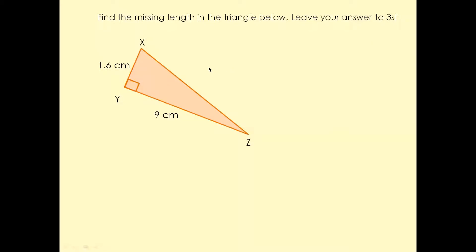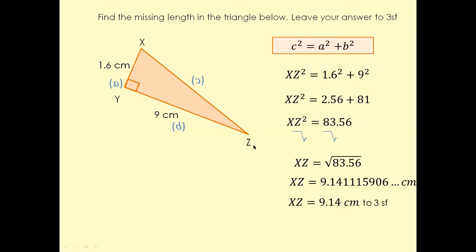Have a look at this question: find the missing length in the triangle below. It's very important to leave the answer to three significant figures. Using a squared plus b squared equals c squared, substituting in the values gives 9 squared plus 1.6 squared equals c squared. That equals 81 plus 2.56, which gives 83.56. The square root of 83.56 is 9.14 rounded to three significant figures.